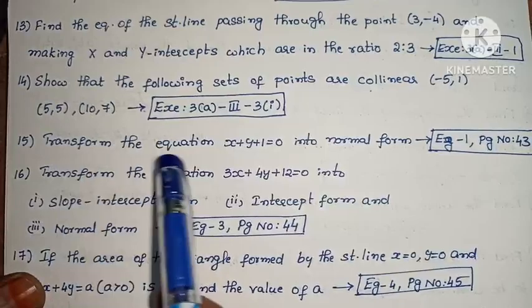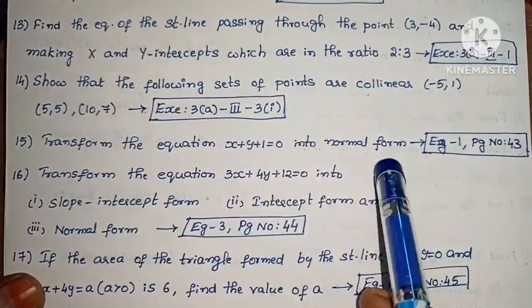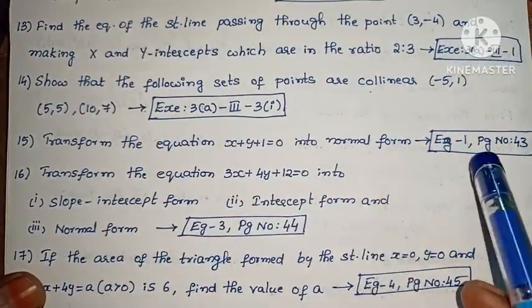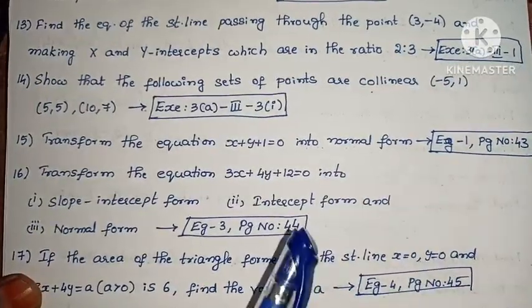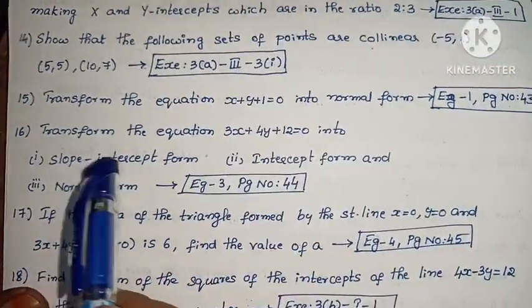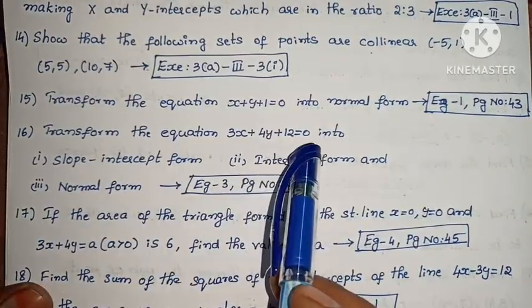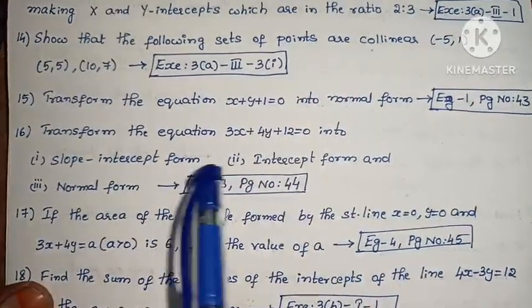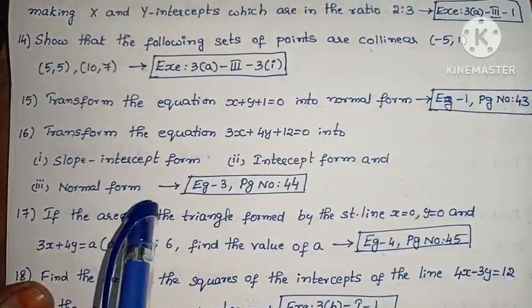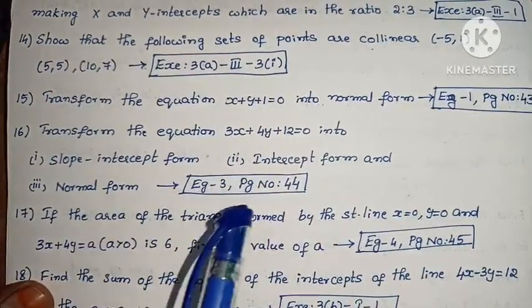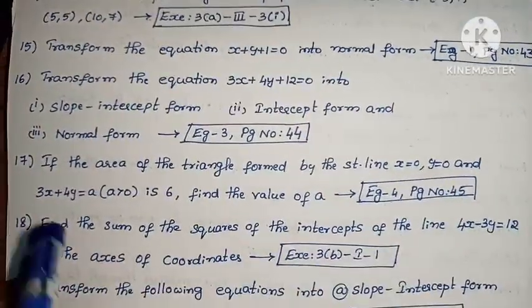Next, transform the equation x plus y plus 1 equals to 0 into normal form. Example 1, page number 43. Next, transform the equation 3x plus 4y plus 12 equals to 0 into slope intercept form, intercept form, and normal form. Example 3, page number 44.